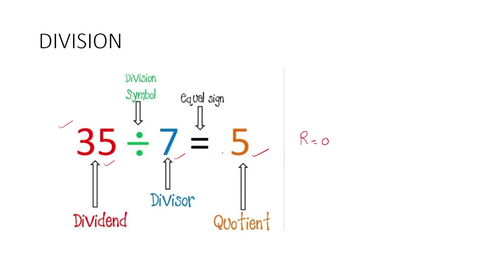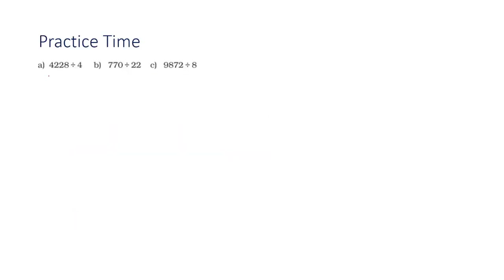Let's start the question-answer part. The first question is 4228 divided by 4. As you all know, 4228 is your dividend and 4 is your divisor. The dividend you have to write inside the box, so here I am writing 4228, and the divisor you will be writing here.